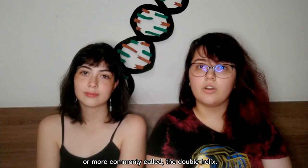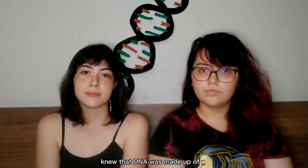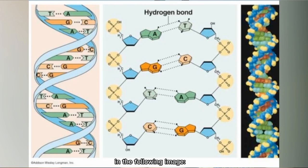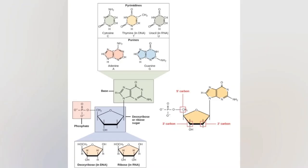Because of the work of biochemist Phoebus Levine and other scientists in Watson and Crick's day, they knew that DNA was made of subunits called nucleotides, which in turn are composed of sugar deoxyribose, along with a phosphate group, and one of the four nitrogenous bases called adenine, thymine, guanine, and cytosine. You can see this structure in the following image. Bases C and T, which have only one ring, are called pyrimidines, and bases A and G, which have two rings, are called purines.